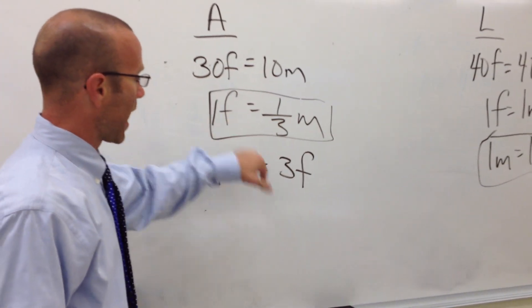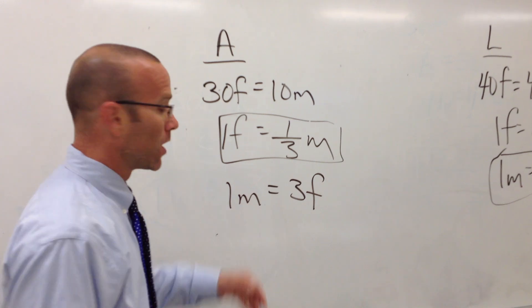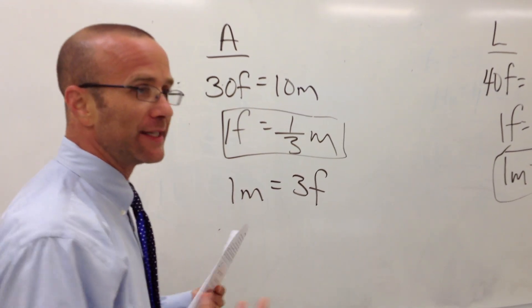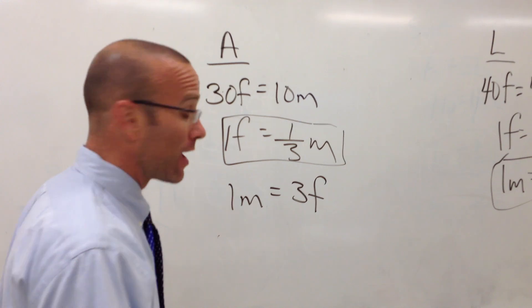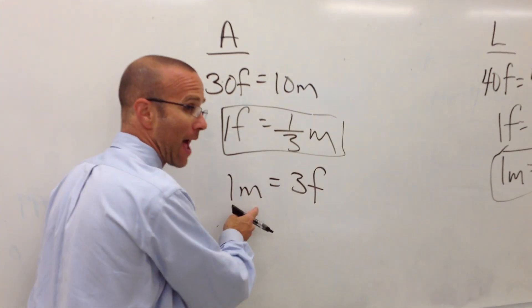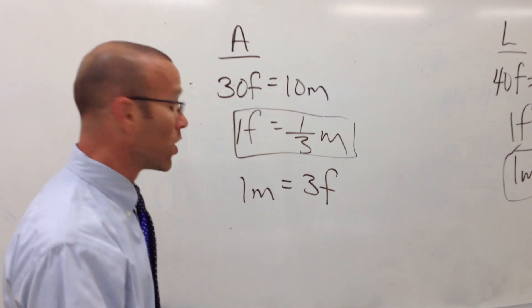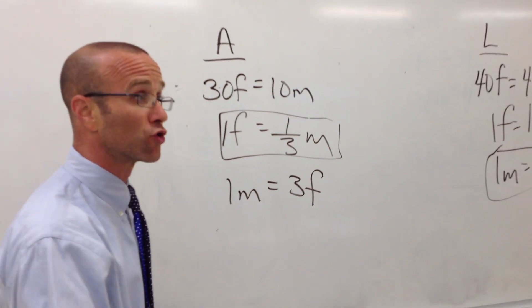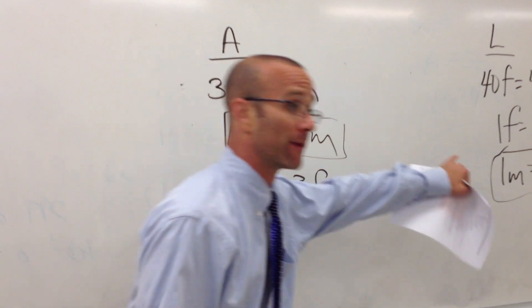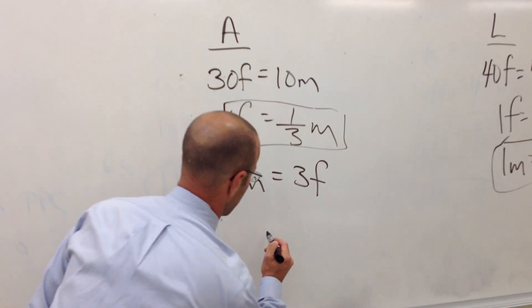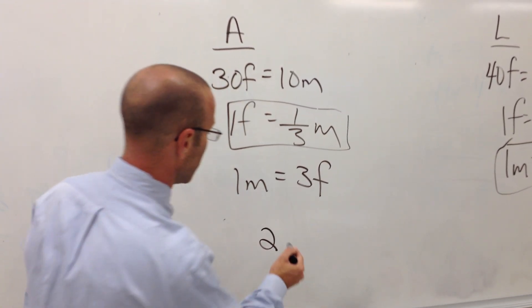I'm going to produce food and trade for M. Well, what's a good deal for me? If I was to produce by myself, I'd have to give up 3F per M. So in trade, to make it worth my while, create an incentive, what's the most amount of food I'm going to trade away in order to get an M from the other country? Two. So 2F.